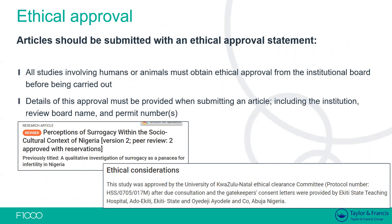In terms of ethical approval, any study that had human or animal subjects must have a clear ethical approval statement. This might apply more if you are conducting a life sciences article, but it can also come into qualitative social science articles where you might involve human participants by conducting a questionnaire or survey. With human subjects, that could be drug experimentation, but it could also be interviews or online surveys.